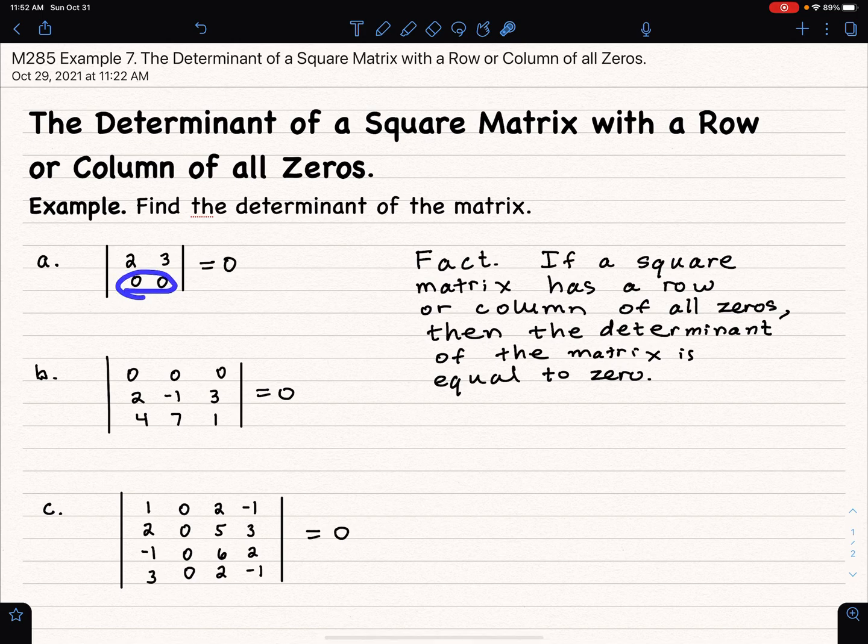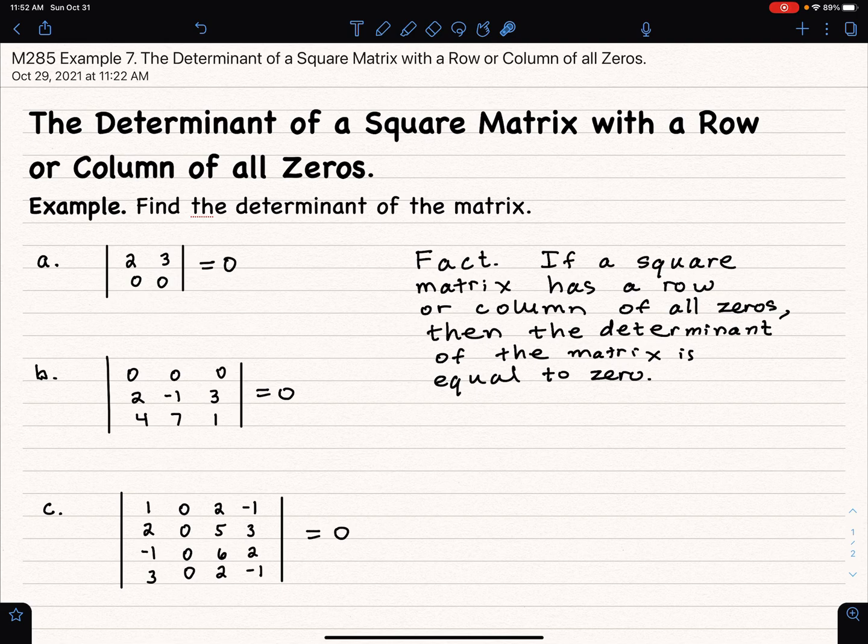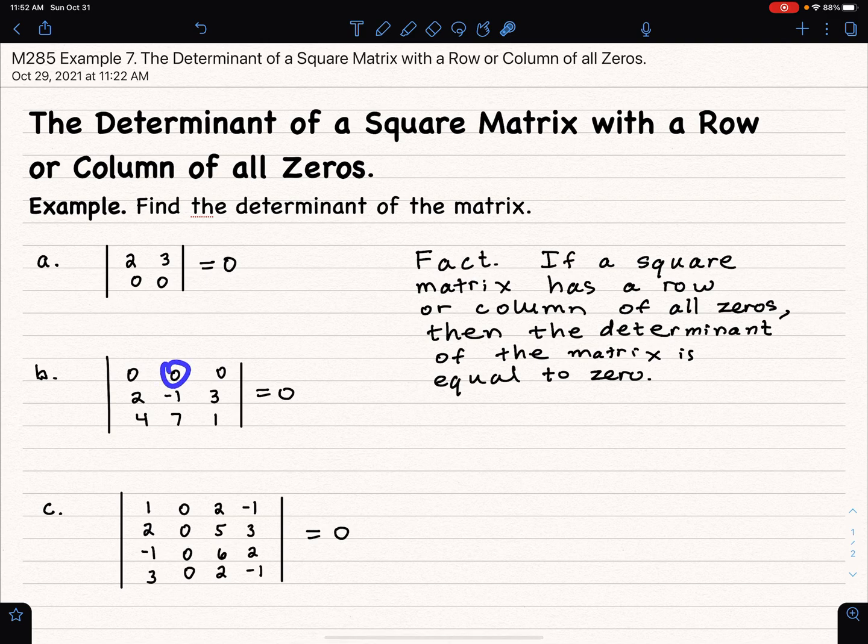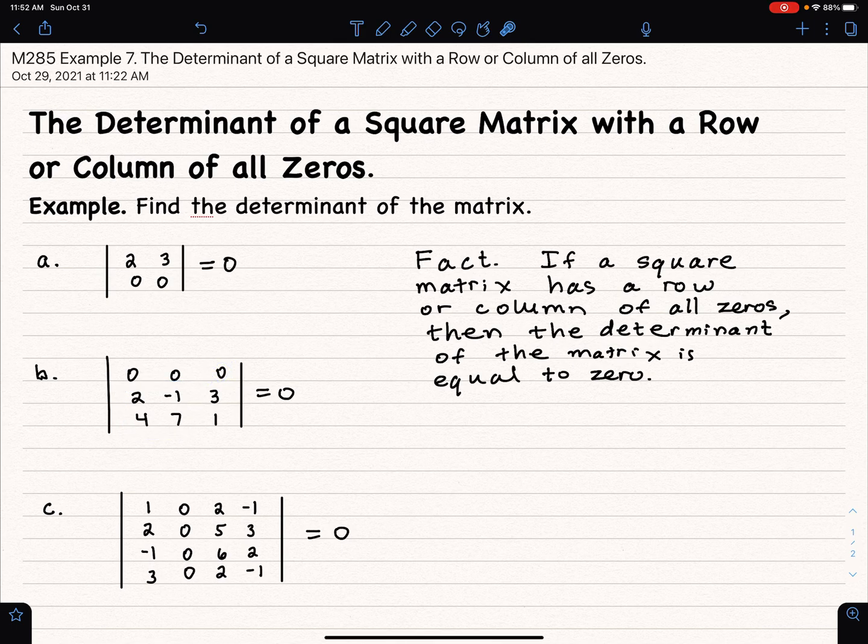then that will give you a determinant of zero, especially this part b here. If I expand across the first row, then I have zero times this 2 by 2 matrix minus zero times this other 2 by 2 matrix plus zero times this 2 by 2 matrix, but you get zero.